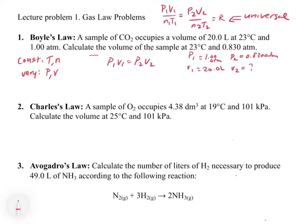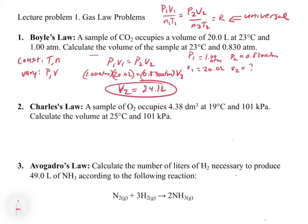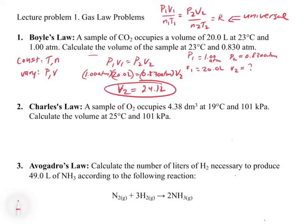Plugging in: 1.00 atmospheres times 20 liters equals 0.830 atmospheres times V2. Solving for V2 gives us 24 liters. As a check: we decreased the pressure, so the volume should increase — and it does, going from 20 to 24 liters. Pressure and volume have an indirect relationship because in PV = nRT, they appear on the same side of the equation.